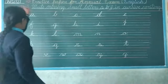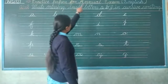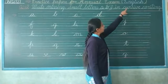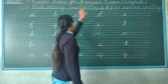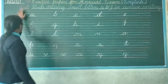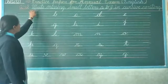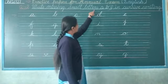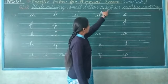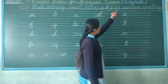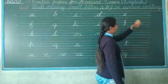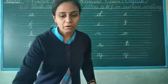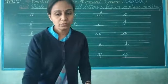Practice paper for annual exam, subject English, question number 2: write missing small letters A to Z in first writing. Ok, so before I told you—